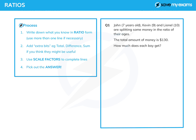Here's a classic question about splitting money in the ratio of ages. John is seven, Kevin is nine, and Lionel is ten, and we're told the total amount of money they get is 130 dollars. The question is: how much does each boy get? Let's start by writing down what we know. We're given the ages, and the ratio of money is the same as the ratio of the ages, so let's write down J to K to L.